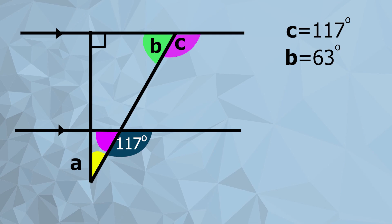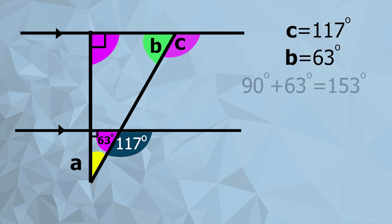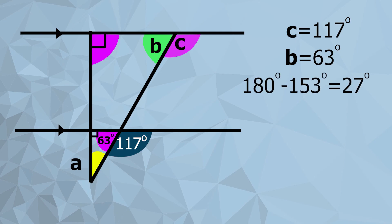Coming back to angle A: we've got that straight line, so 117 degrees plus the missing angle equals 180 degrees — we've already worked that out as 63 degrees. The other angle in the triangle must be a right angle because it corresponds with the right angle shown above. So we have 90 degrees and 63 degrees in the triangle, which adds up to 153 degrees, so angle A must be 27 degrees since all angles in the triangle add up to 180 degrees.